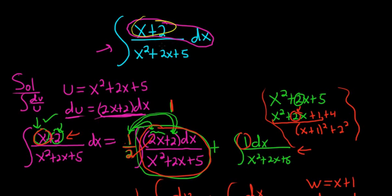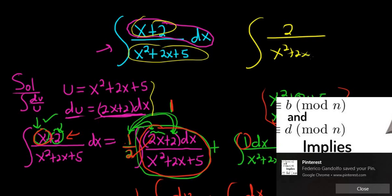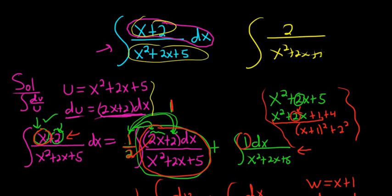Because we have an x here and we have x squared down here, we start by making a u sub and then we just go from there. We manipulate things. If it had just been something like 2 over x squared plus 2x plus 5, then we would have used the arctan formula right away. That's it.